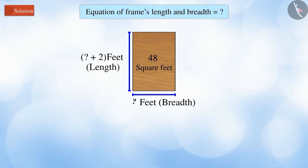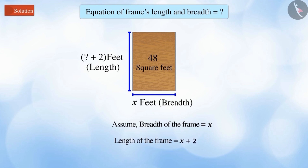the given information. To begin with, let's assume the breadth of the frame as x feet. Now, to find the length of the frame, let's add 2 feet to x, which gives the length as x + 2 feet. We know that the wooden plank is rectangular.